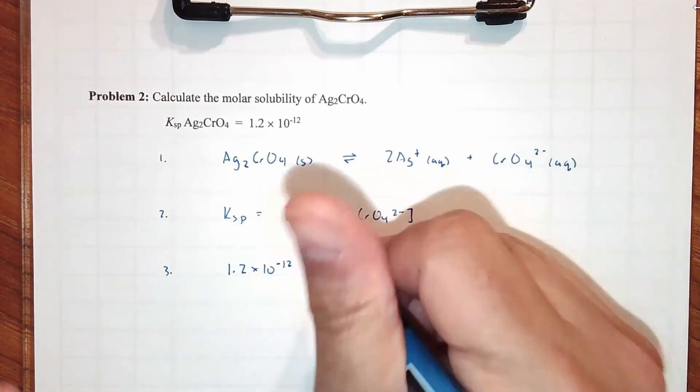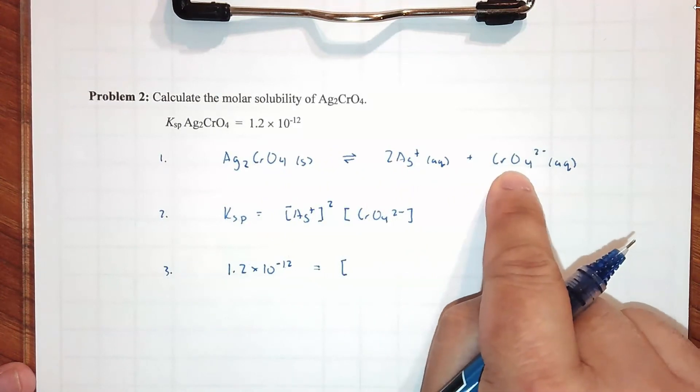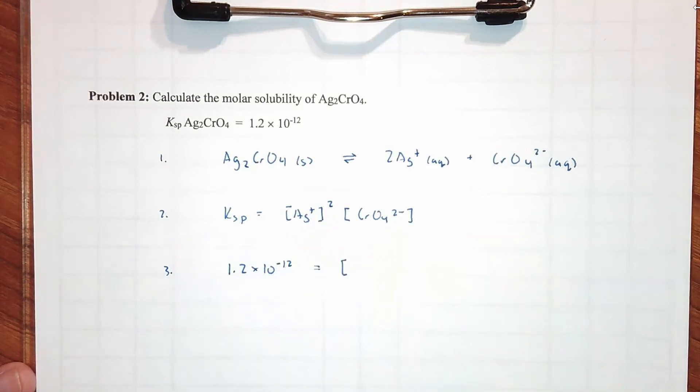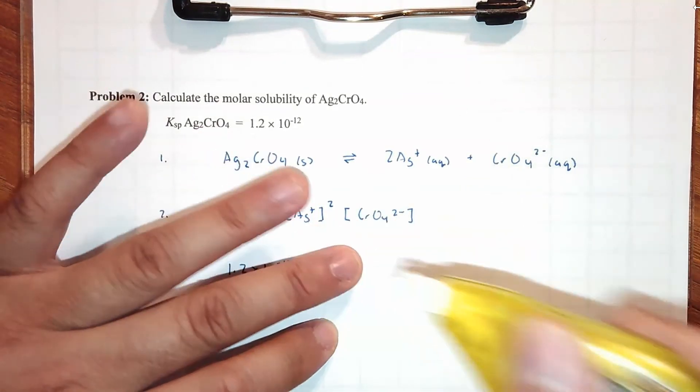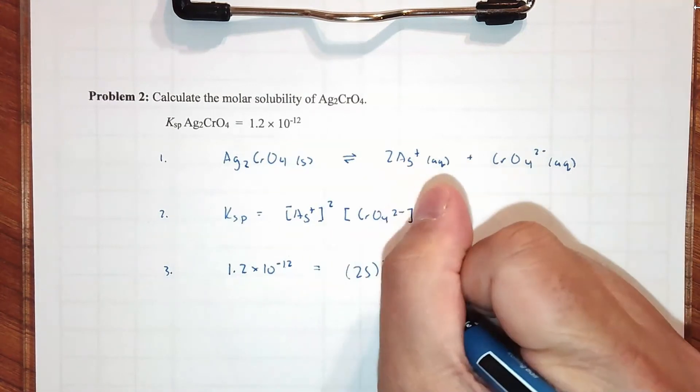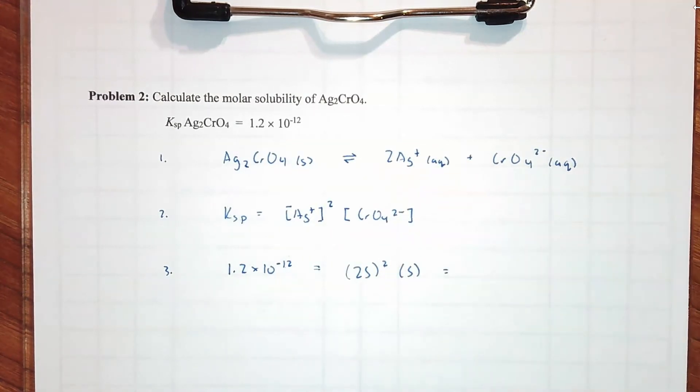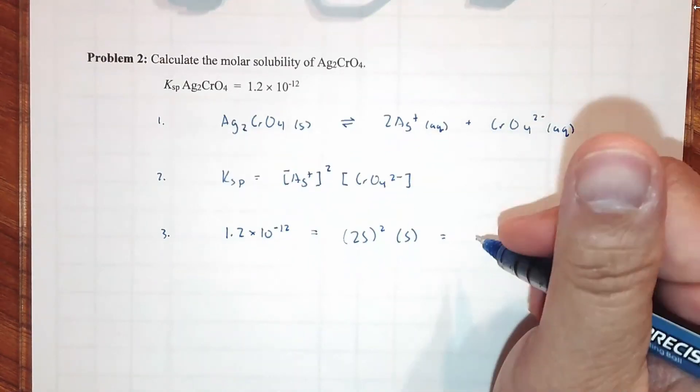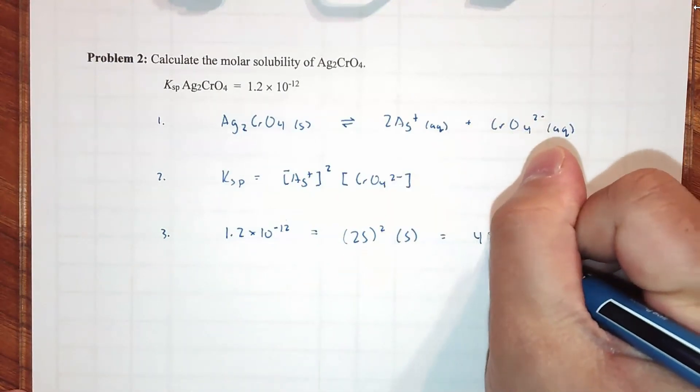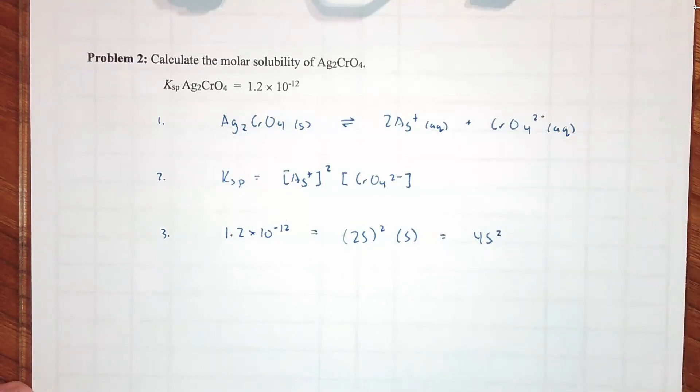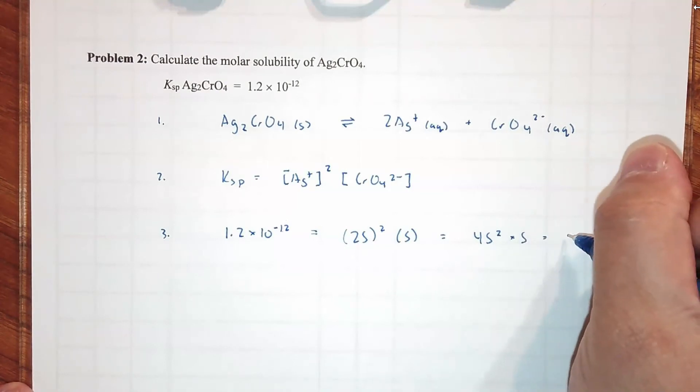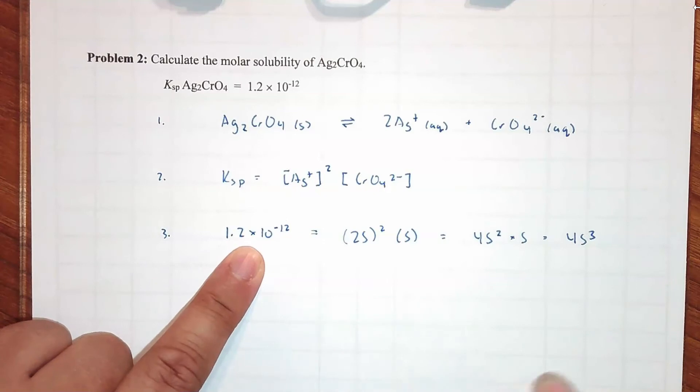1.2 times 10 to the -12 equals, now what's the trick here? The trick here is to make S the concentration of the component that has a coefficient of one. One mole. So if this is S, the amount of this is S, the amount of Ag has to be 2S. So I'm looking at the brackets, actually. If the chromate concentration is S, the silver concentration has to be 2S. And now all of that is squared times S.